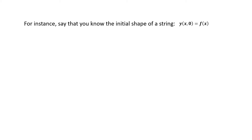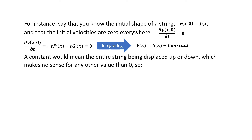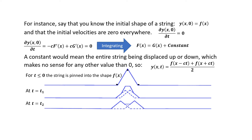For instance, say you know the initial shape of the string — y(x,0) is a known function of x — and that initial velocities are zero everywhere. Then f and g must be the same except for a constant. A nonzero constant would mean the entire string displaced, which makes no sense, so the constant is zero. For t less than zero the string is pinned into shape f(x); at t equal to one the pins are removed and the shape begins to change; by t equal to three, two waves are traveling left and right.